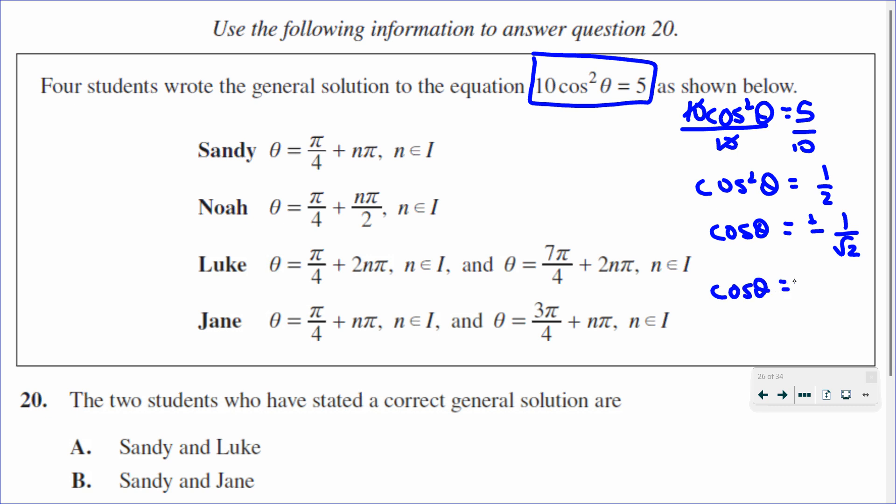I'm just going to rationalize my denominator by multiplying top and bottom by root 2, so 1 times root 2 over root 2 times root 2 is 2.